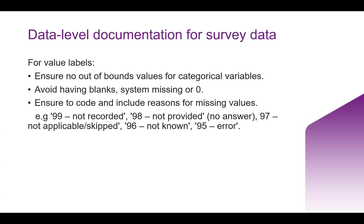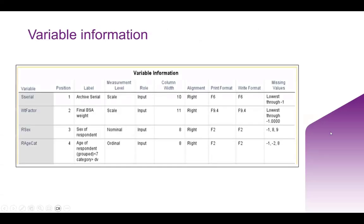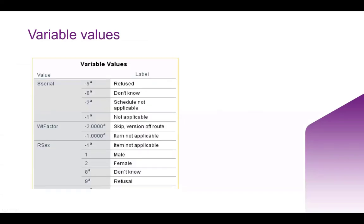Avoid having blanks or zeros, and instead label your missing data with detail where possible — differentiating between potentially not recorded, not provided, not applicable, not known. There are a lot of different reasons for missing values, so getting a little bit more nuance there is always helpful. Here we have an example of an SPSS variable view, which shows the variable name, the label, as well as the measurement and the missing values. And here are the variable values, which includes missing information.